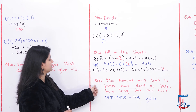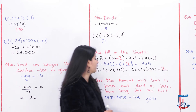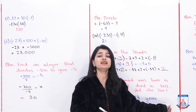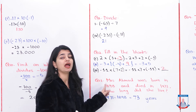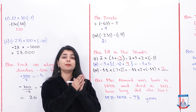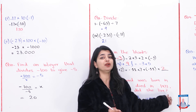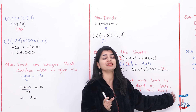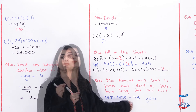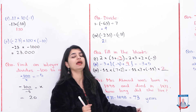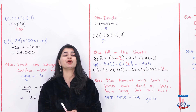Question number 13 is a word problem: Mrs. Ahmed was born in 1898 and died in 1971. How long did she live? Simply subtract: 1971 minus 1898. Using proper subtraction, the answer is 73. So she lived for 73 years.